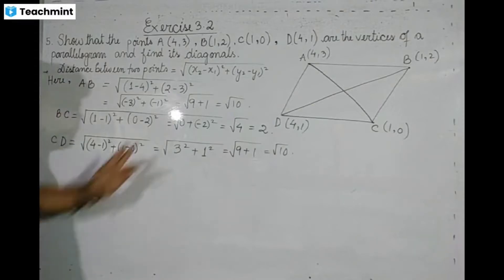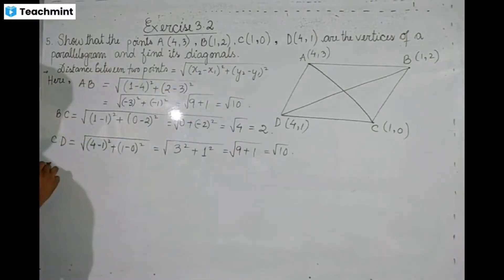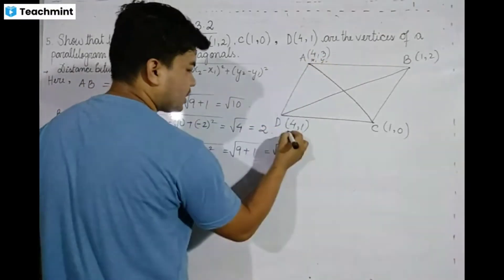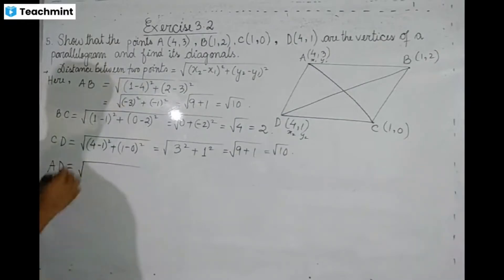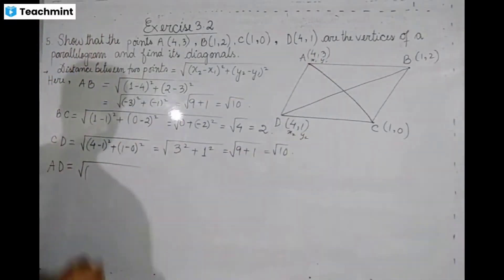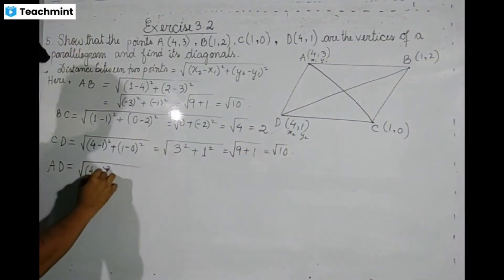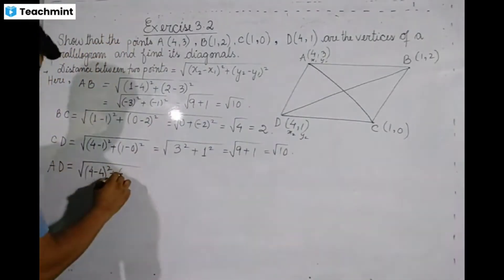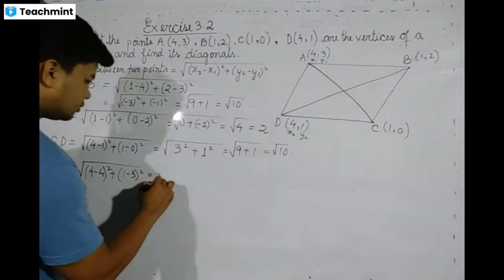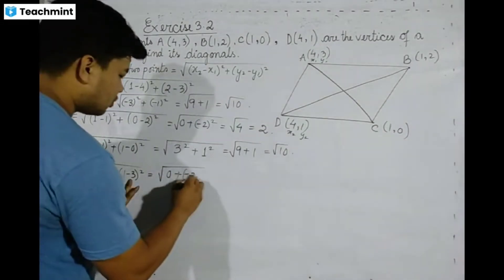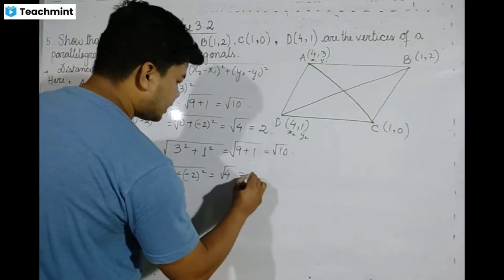AB, BC, CD are calculated. Next we calculate AD. AD uses A coordinates (x1=4, y1=3) and D coordinates (x2=4, y2=1). So x2 minus x1 equals 4 minus 4, whole square, plus y2 minus y1 equals 1 minus 3, whole square. That gives 0 plus minus 2 whole square, which is root 4, equal to 2. So AD equals 2.